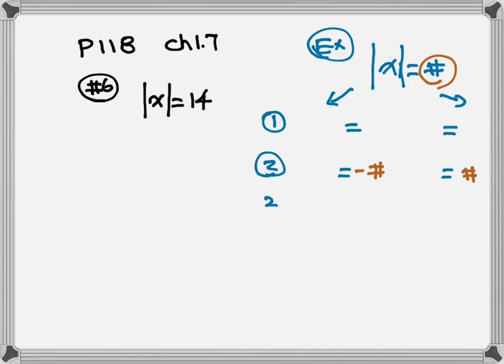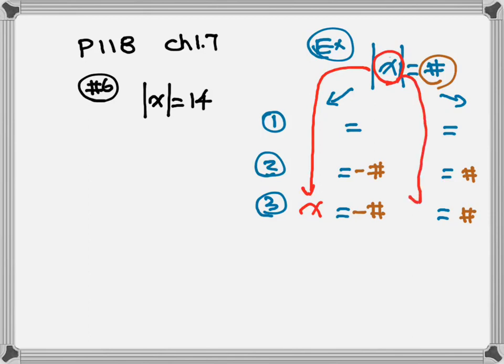Step three: whatever is inside the absolute value, no matter how many numbers, always goes to the left-hand side of each equation. You have two equations, so it always goes to the left-hand side of each equation. That's how you solve the absolute value equation. Let's go back to our problem.